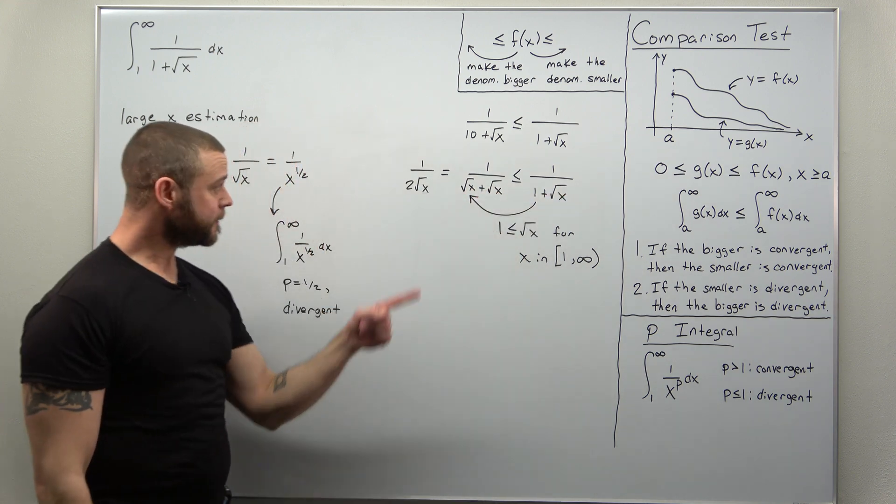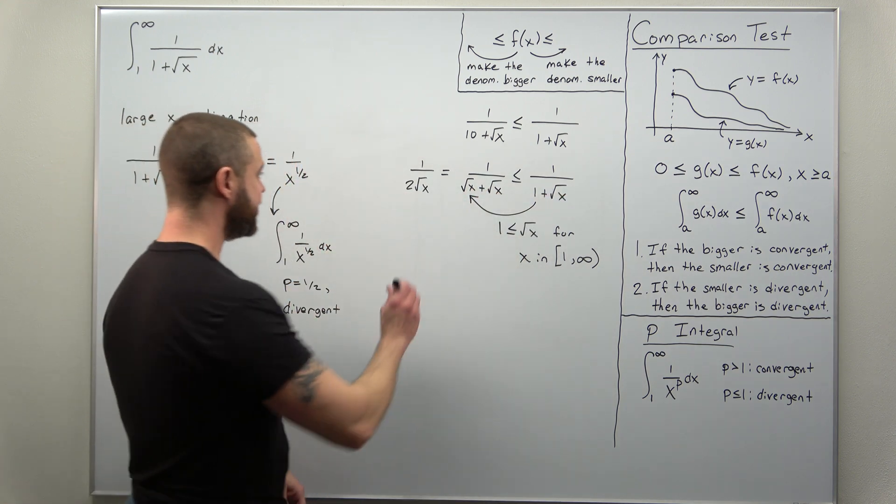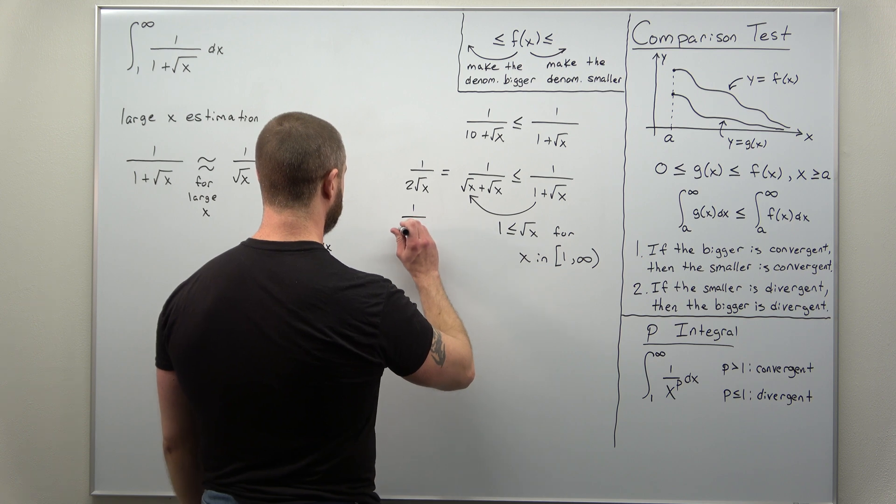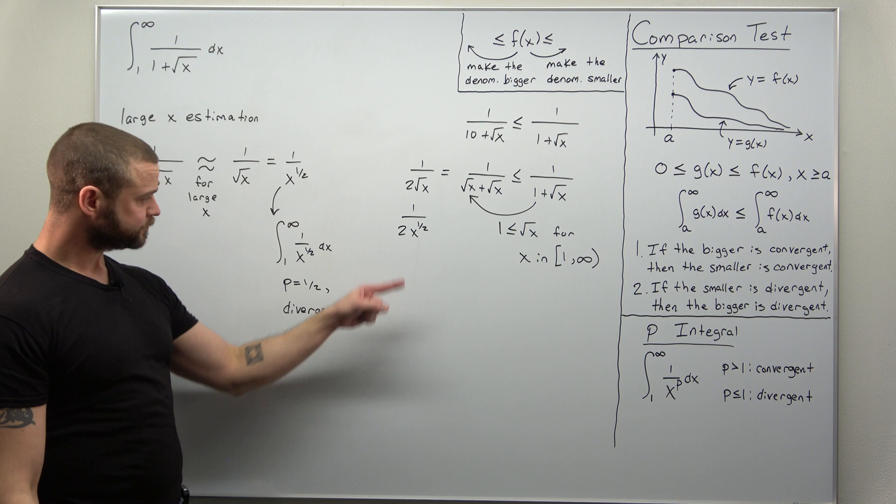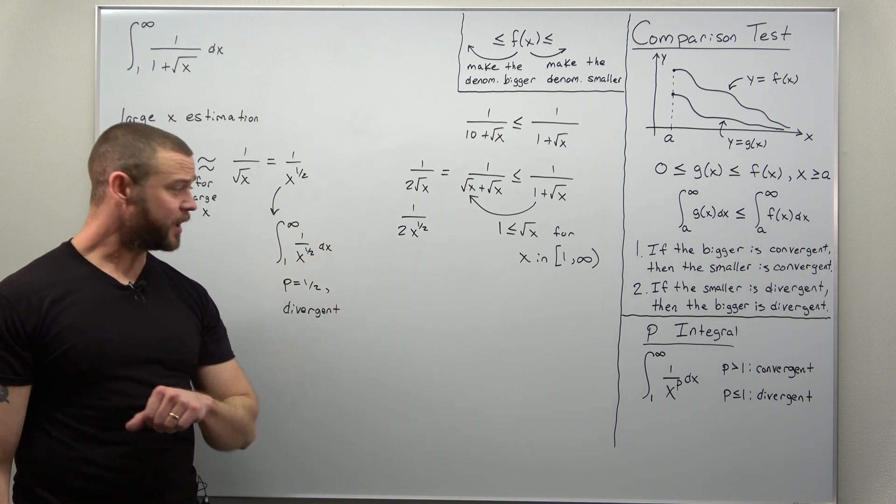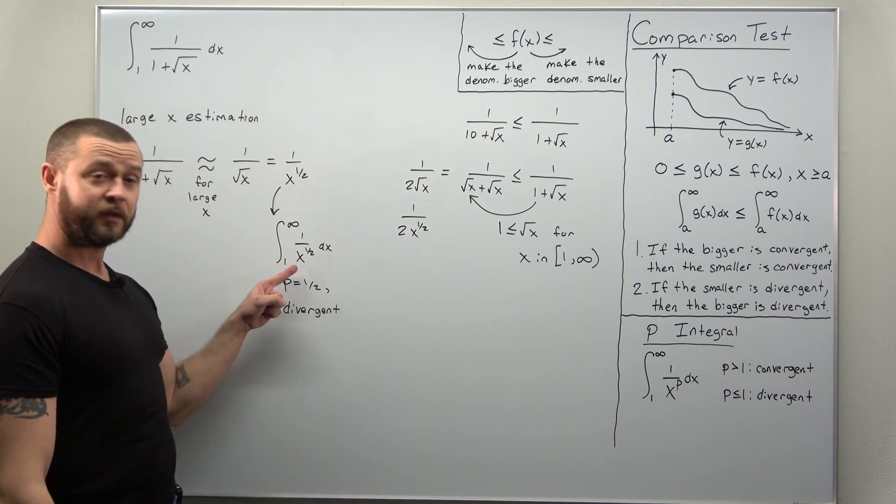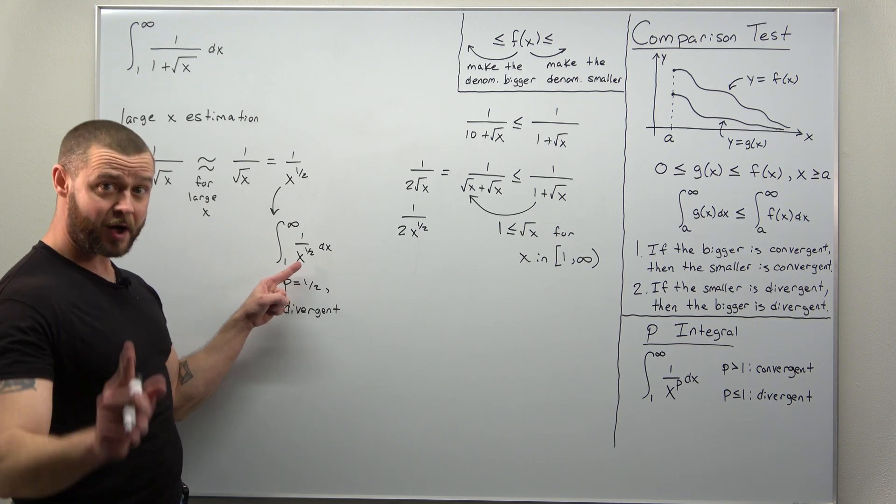And that's the key here because now this is the same thing as one over two times x to the one half. The factor of two is not important, but that x to the one half in the denominator is.